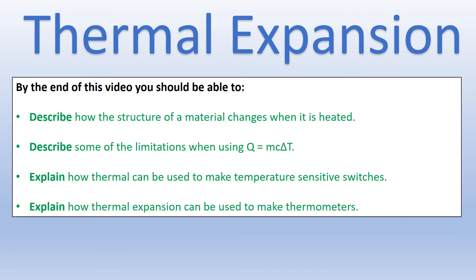That finishes off this video. We've looked at how material structure changes when heated, the limitations of Q = mcΔT, bimetallic strips as switches, and how thermometers are constructed. If you have any questions please do comment and let me know — I'd be more than happy to get back to you. Thank you very much for taking the time to watch.